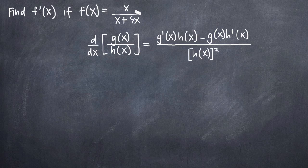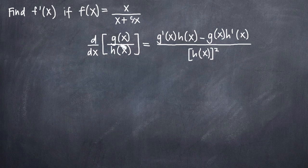The first thing we need to do is understand our quotient rule formula. I've gone ahead and written the quotient rule formula here. It tells us that if we want to take the derivative — d over dx means take the derivative of what follows — so if we want to take the derivative of a fraction where we have g(x) in the numerator and h(x) in the denominator,